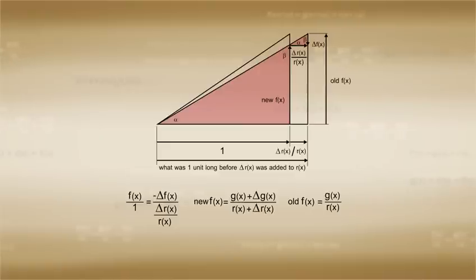In our case, the function g didn't change, and so delta g is equal to 0. And so we can say that the new f is actually equal to g over r plus delta r.